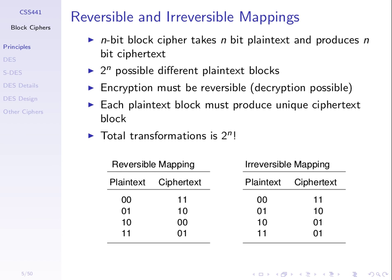A reversible mapping means that given the ciphertext, decrypting using this same mapping produces a unique plain text. The right-hand table is not reversible — if the ciphertext is 01 and you want to decrypt it, the output could be 10 or 11; we don't know. An irreversible mapping is not a valid encryption algorithm. We must have unique values so we can decrypt. The algorithm must produce unique outputs for each input.